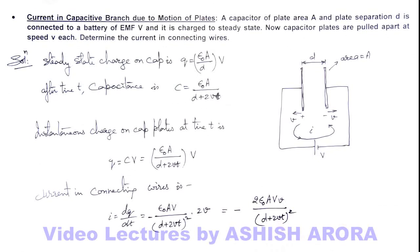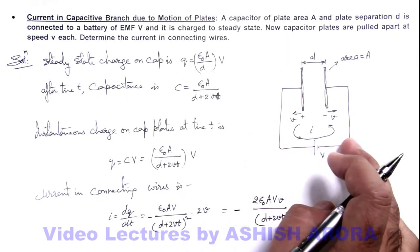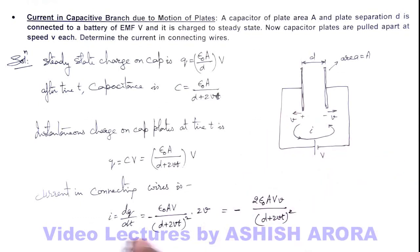So in this situation, negative sign only denotes that the direction of current is opposite to charging, or with time charge is decreasing. The magnitude is given by this value.